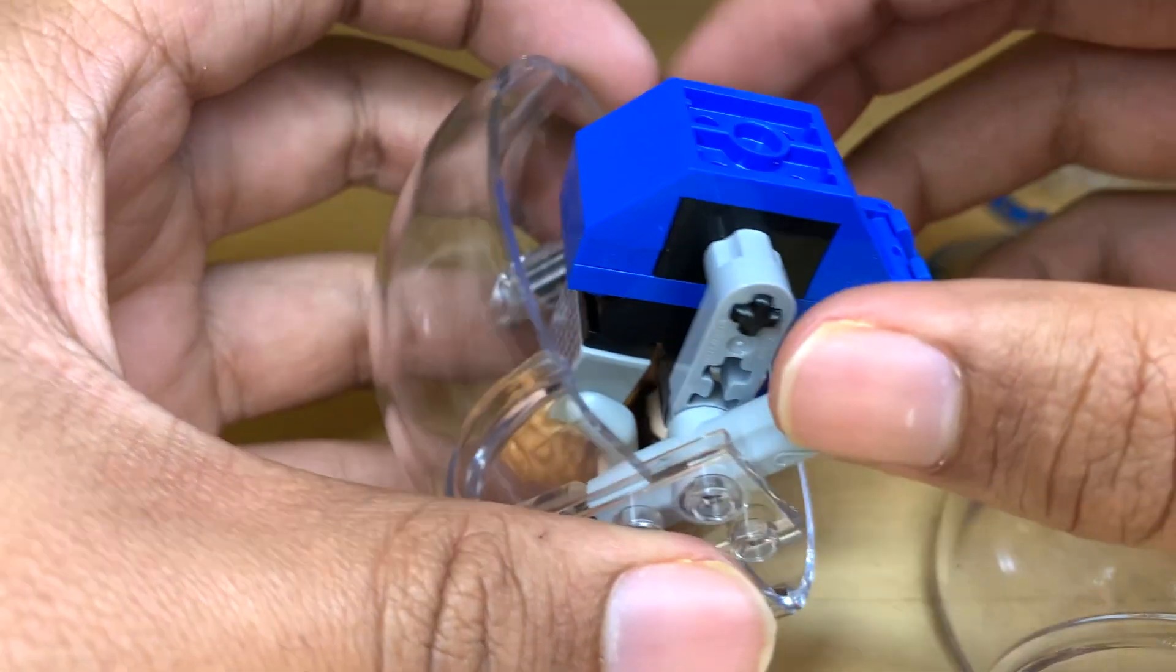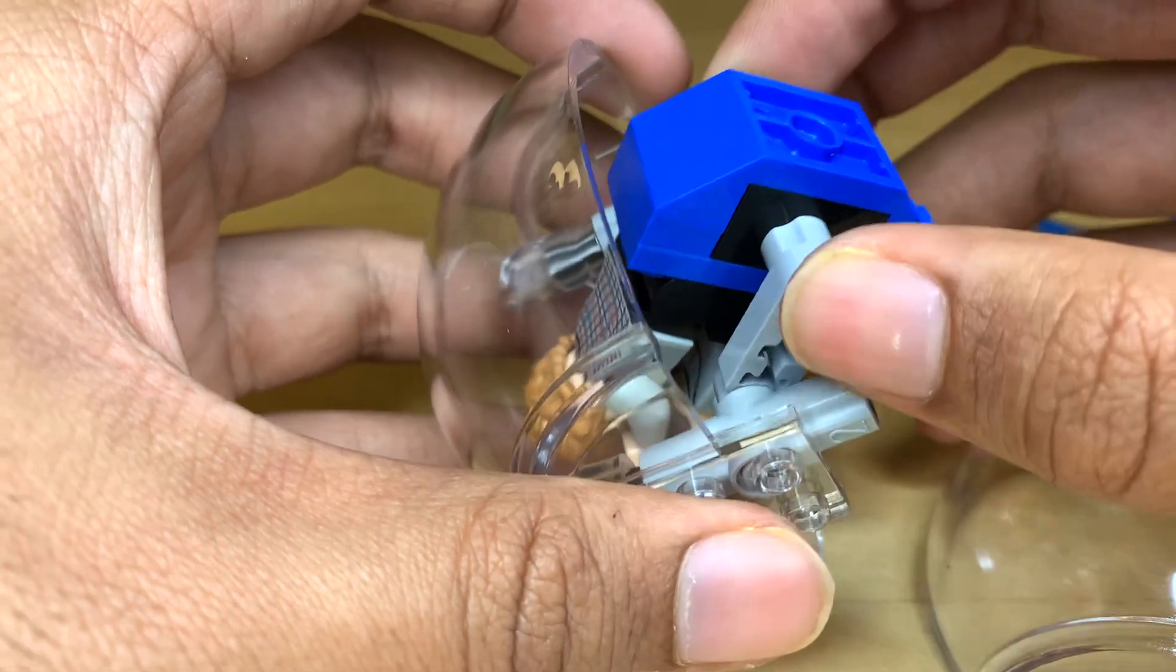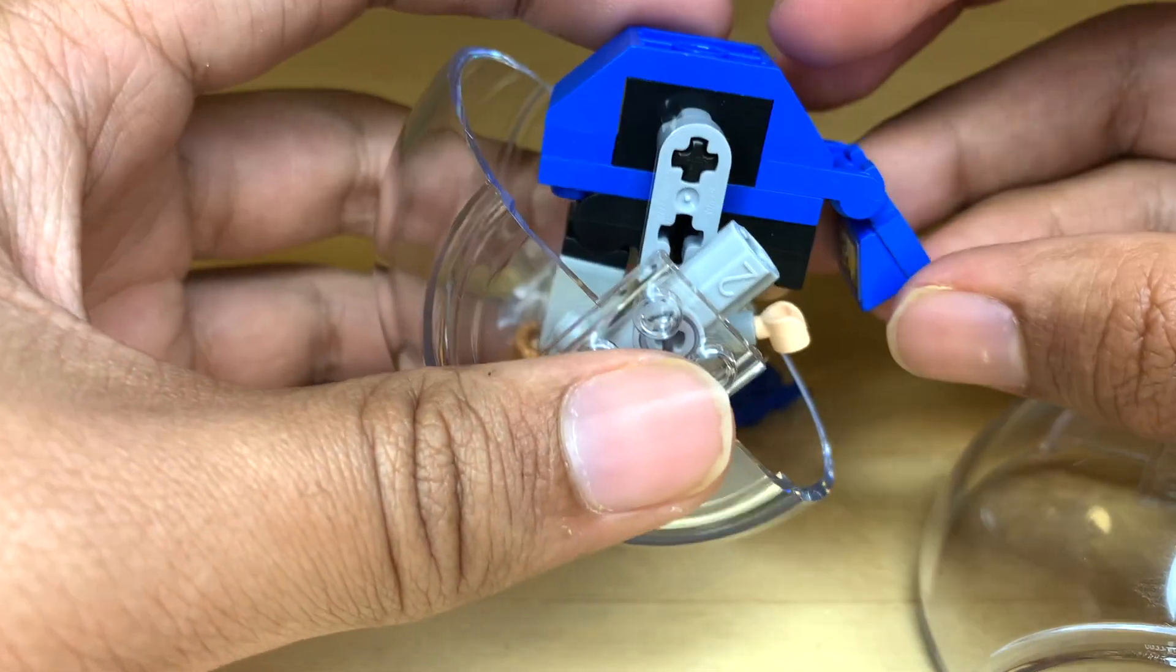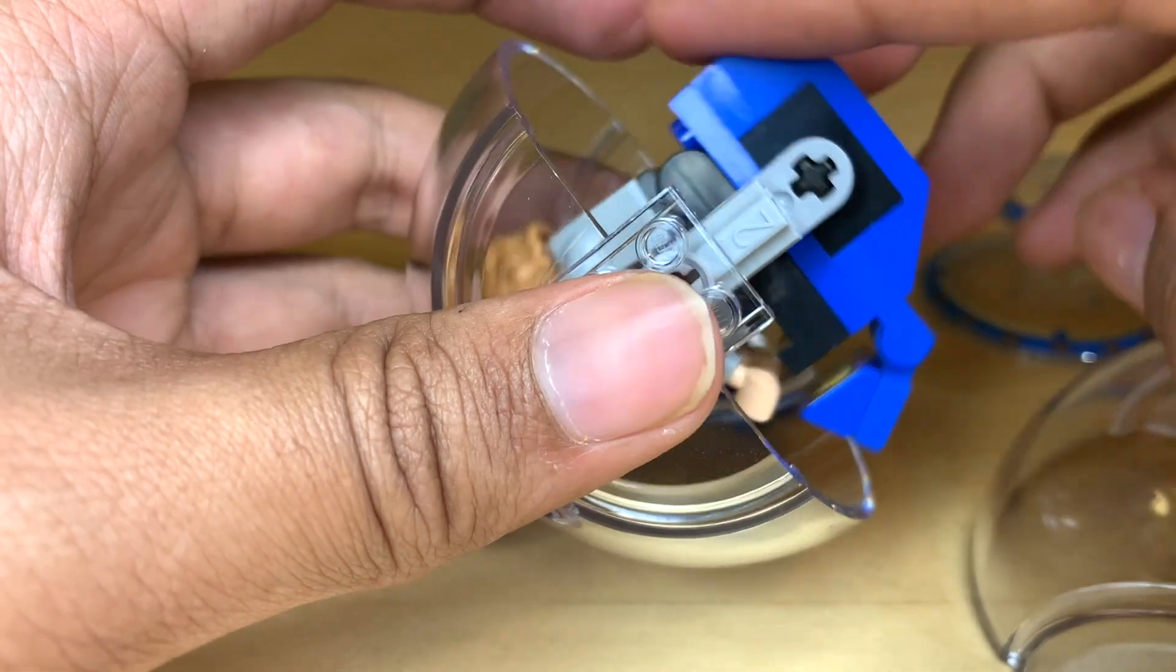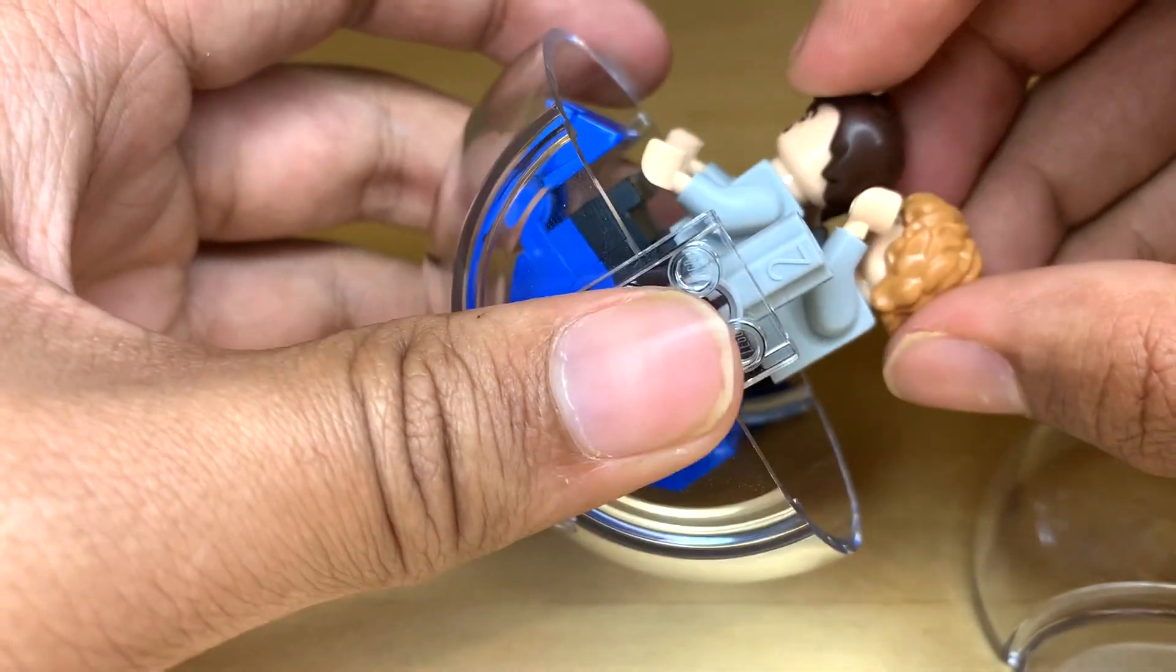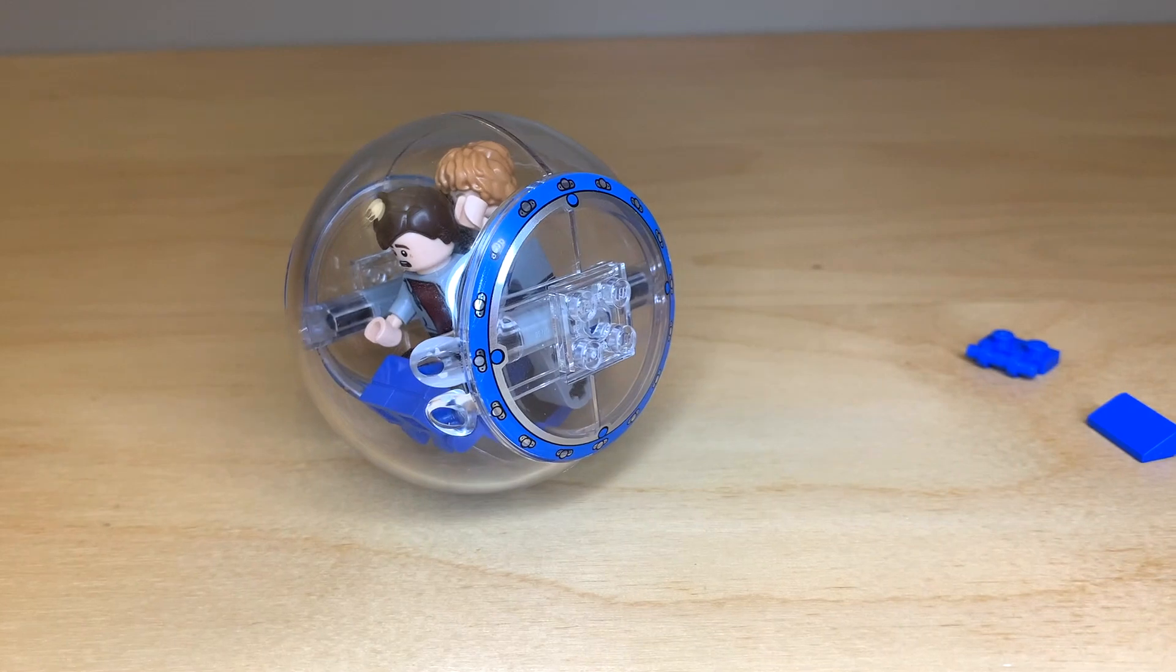The one thing you're going to want to watch out for is you want to make sure that nothing's too tight because you want this thing to be able to move around freely. And then you also want to make sure that the control console is tucked up close enough to the first figure's feet to allow for clearance of the figures. So there we go. We now have a two-figure gyrosphere.